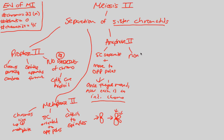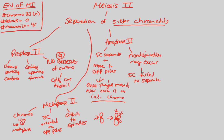We also need to remember that nondisjunction can occur at any anaphase. We'll return to this when we look at genetics at the human level. In anaphase 2, nondisjunction means the sister chromatids fail to separate. By contrast, nondisjunction in anaphase 1 would mean the homologous chromosomes failed to separate — note that important difference.